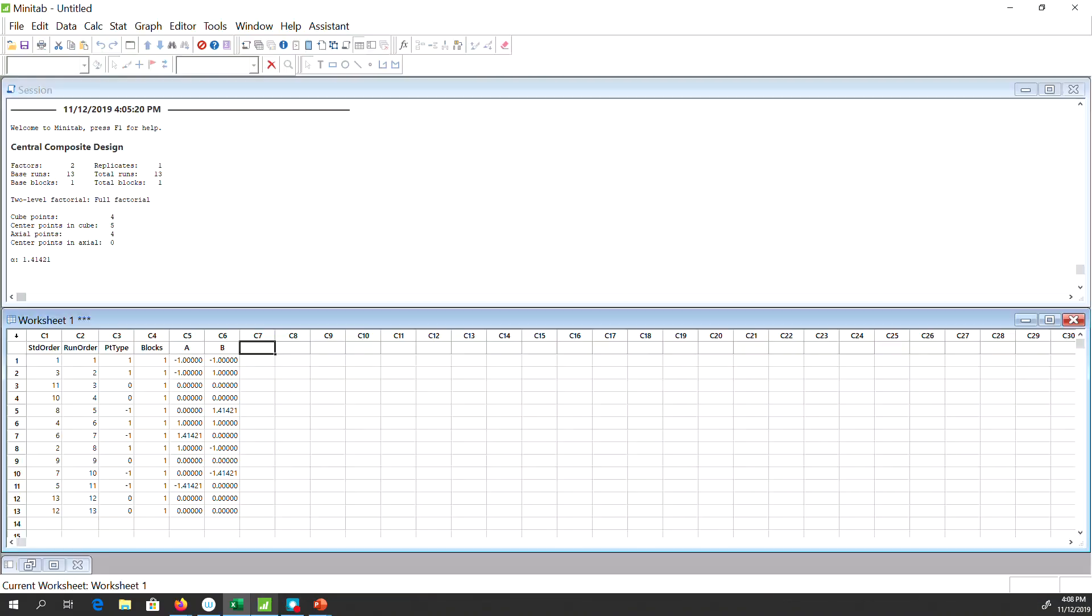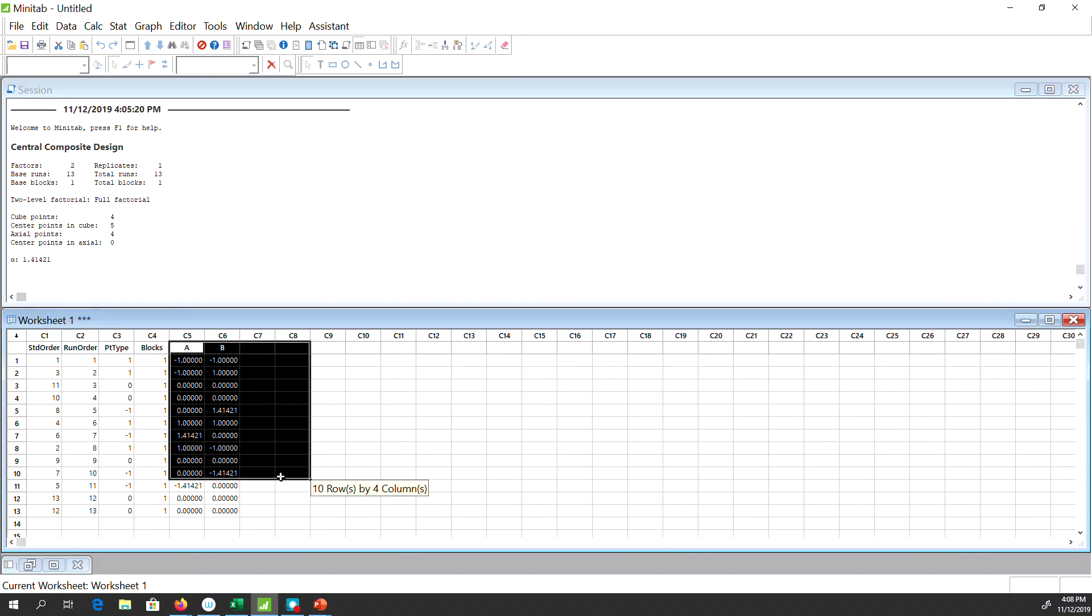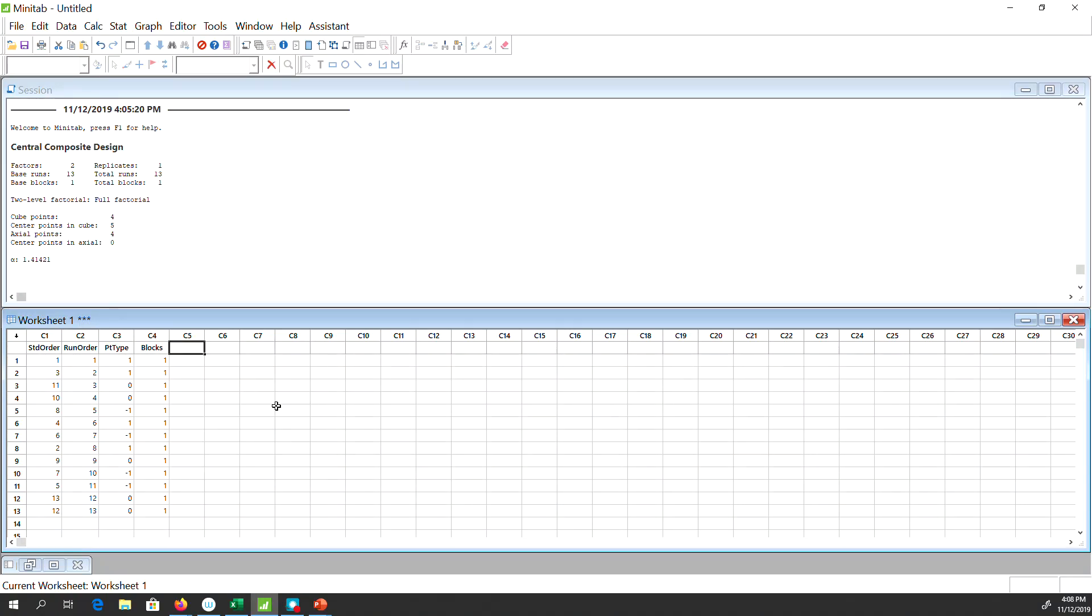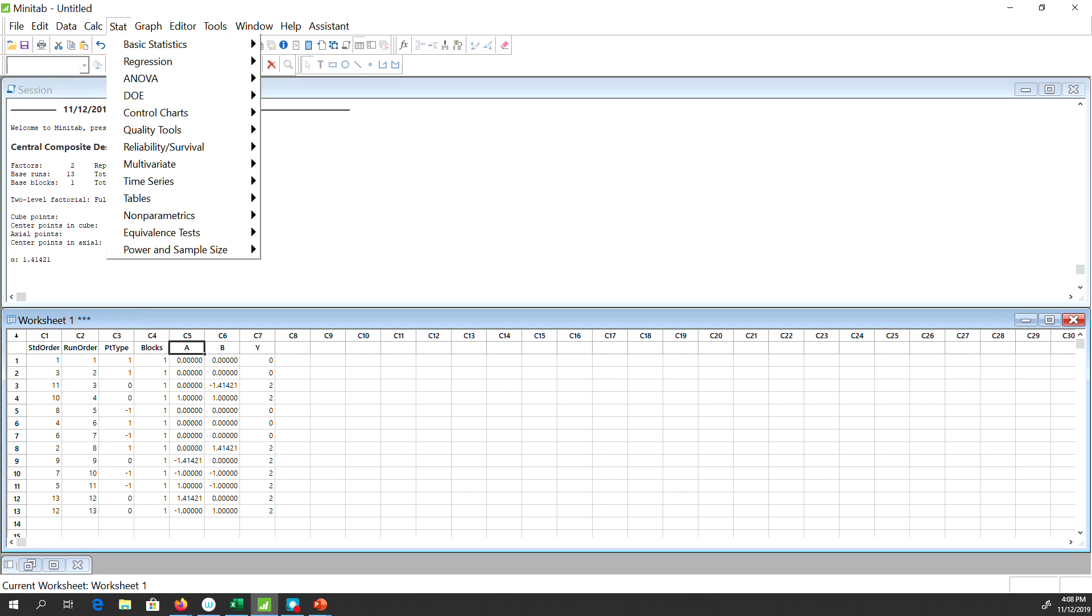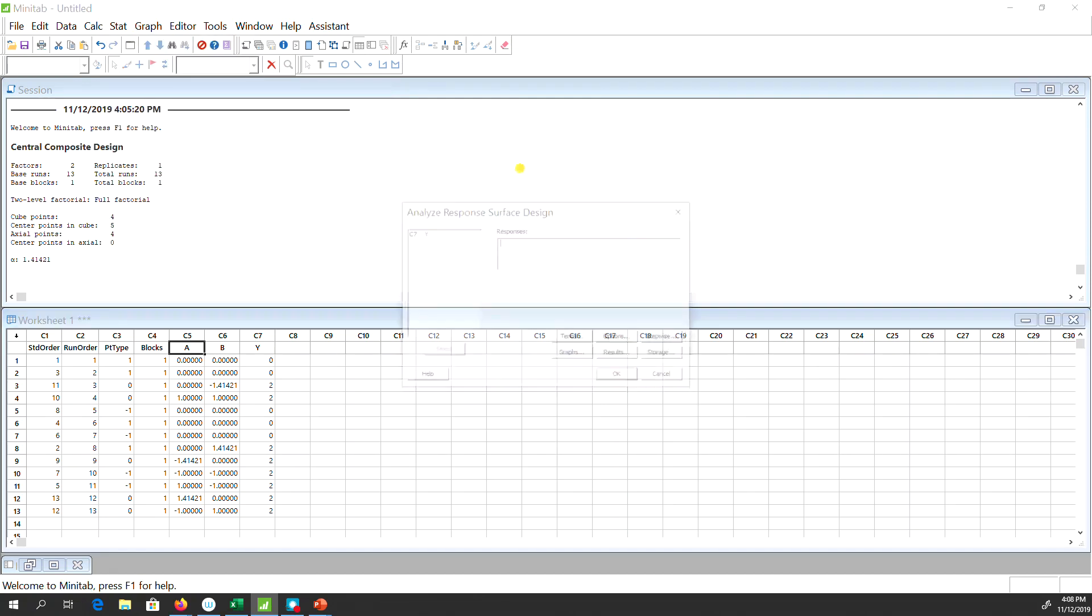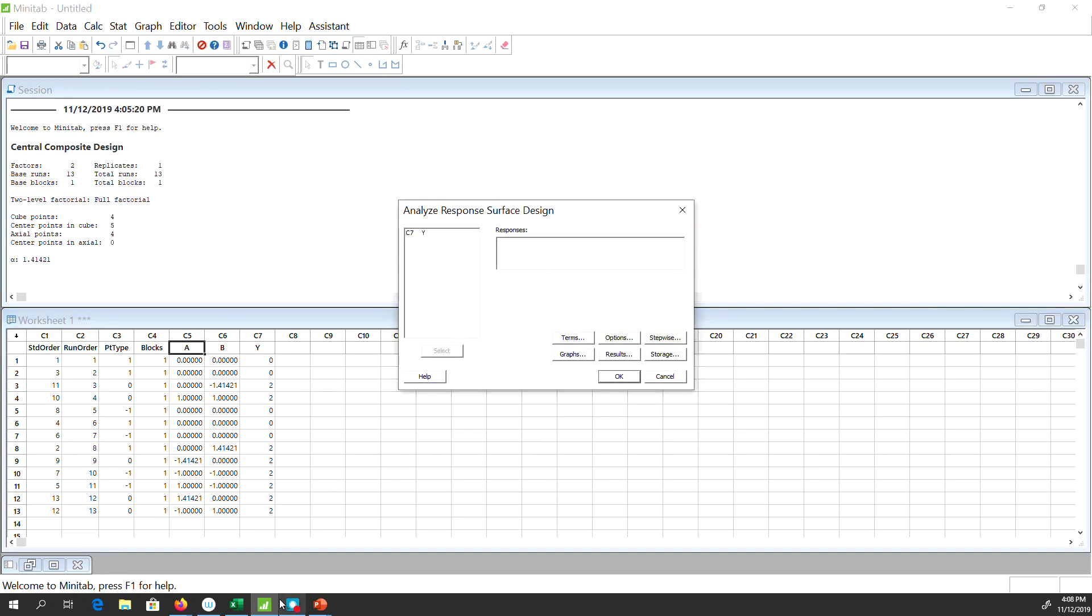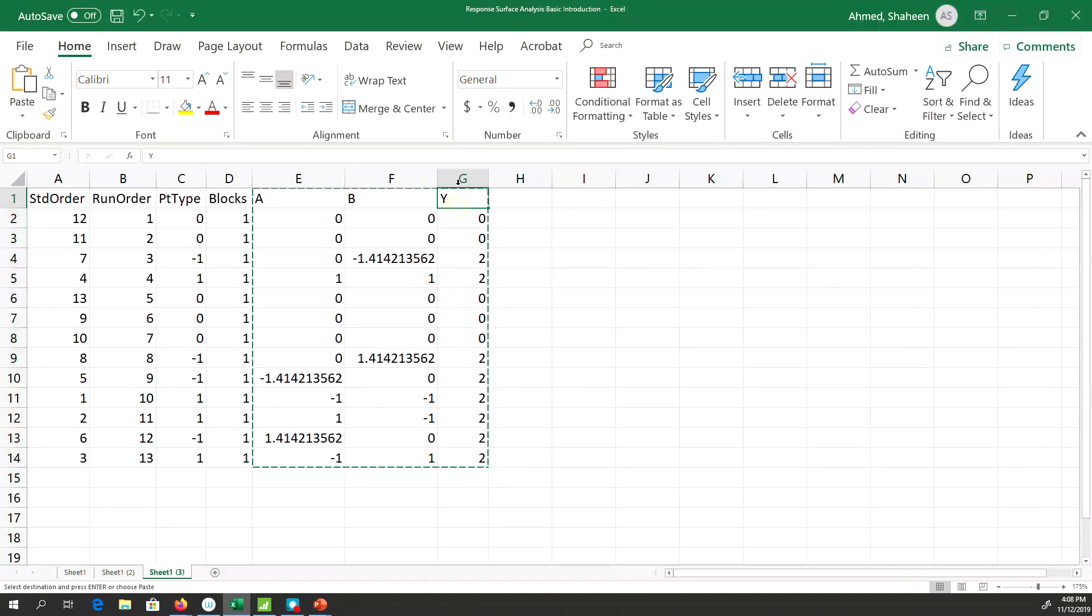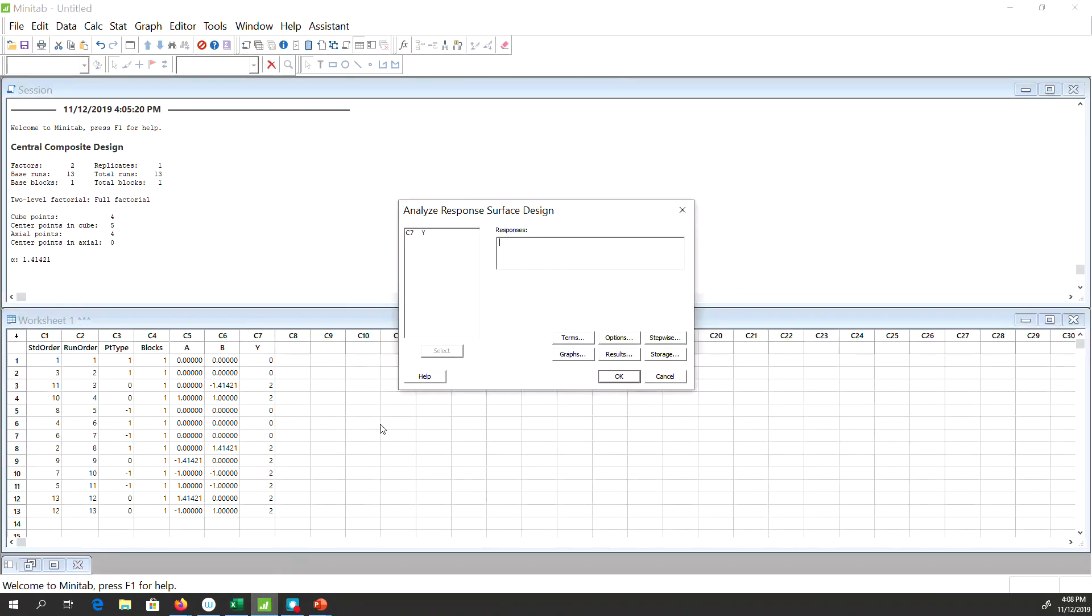Let's copy that in Minitab. I'm going to copy the whole thing here, delete that, copy it here. You already created the design, now let's analyze it. After you created the design, collect the data response Y, copy it back in Minitab, and then select the response Y.